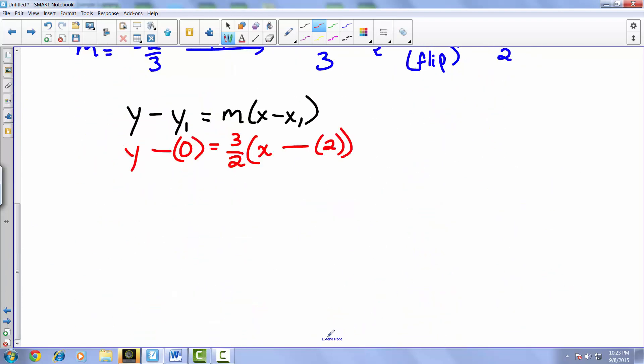Simplifying things up, we end up with y minus 0 equals three-halves times x minus 2. When you have y and you subtract nothing from it, it's still just y by itself on the left side. Distributing in this three-halves, we end up with three-halves x minus three-halves times negative 2, which comes out to be negative 3. And there is our equation of the line.